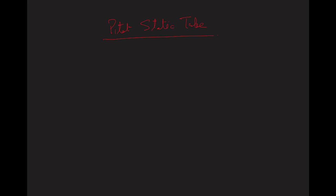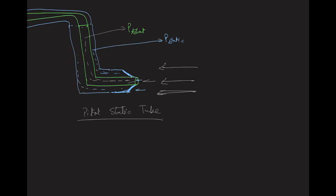In this video we are going to understand the working of a pitot static tube. A pitot static tube is basically a device which is used to measure the airspeed of an aircraft. It is also used in wind tunnels as well as aircraft.